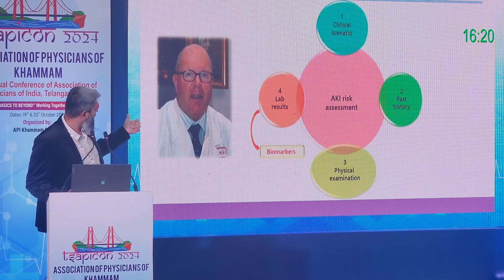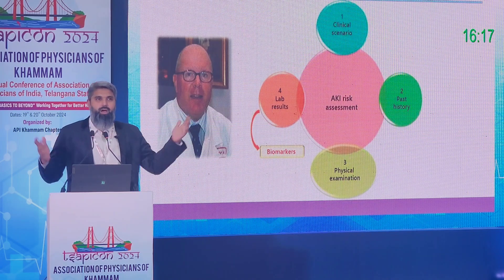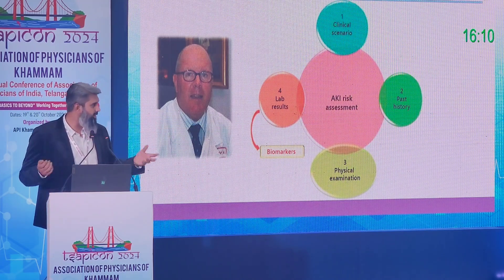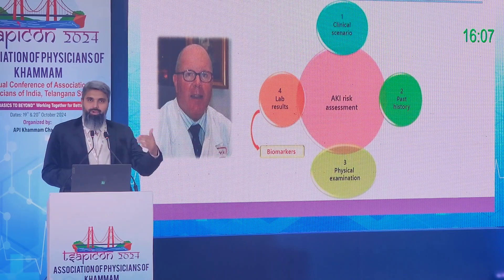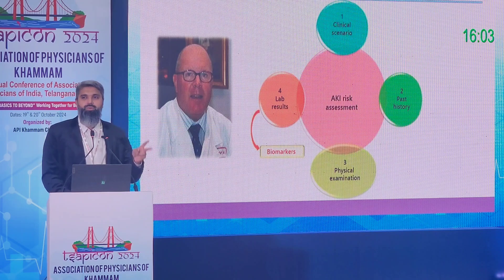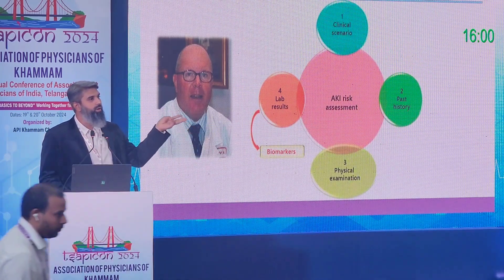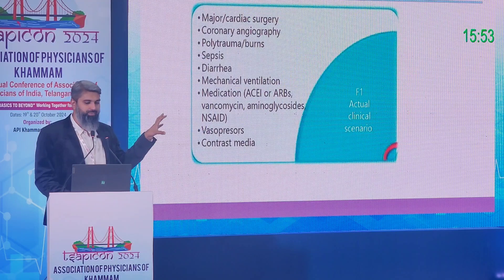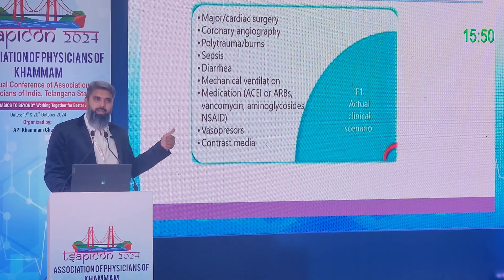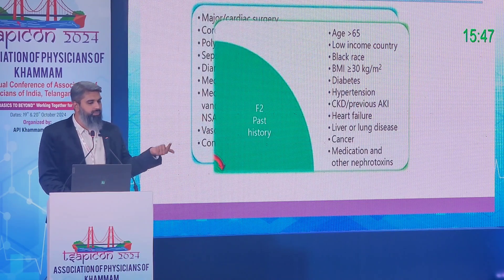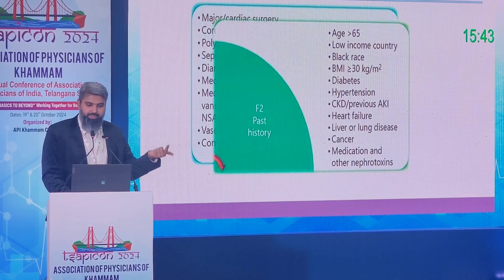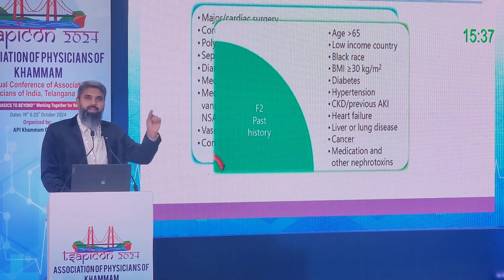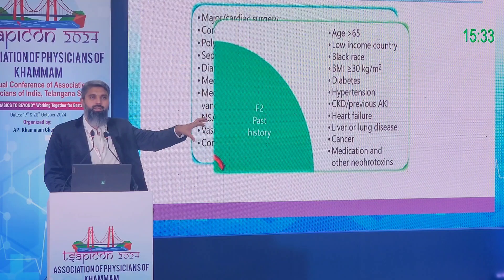Once a patient comes into the ICU, classify whether they are at risk for AKI. Claudio Ronco has developed a fantastic four-factor risk card. If you have two of these risk factors, you are at moderate risk; if three, you are at high risk for AKI. Risk factors include the reason for ICU admission (e.g., sepsis), age, and comorbidities like diabetes, hypertension, heart disease, and liver disease.